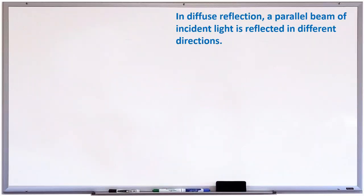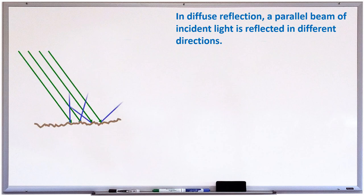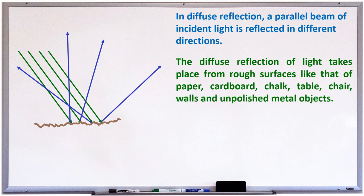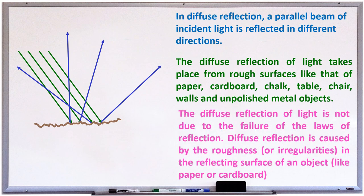In diffuse reflection — diffuse reflection means irregular reflection — a parallel beam of incident rays is reflected in different directions. The diffuse reflection of light takes place from rough surfaces like that of paper, cardboard, chalk, table, chair, walls, or unpolished metal objects. The diffuse reflection of light is not due to the failure of the laws of reflection, but it is due to the roughness or irregularities on the reflecting surface of the object.